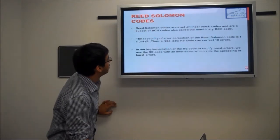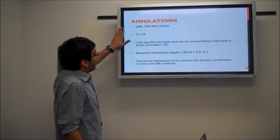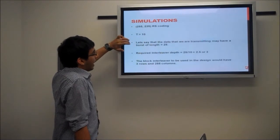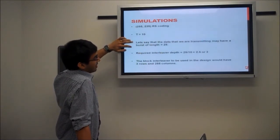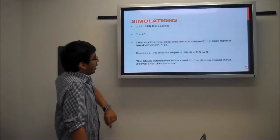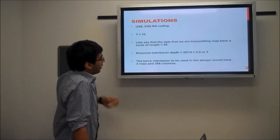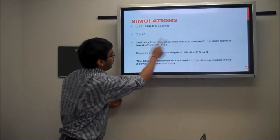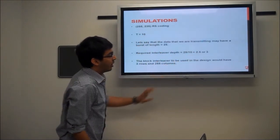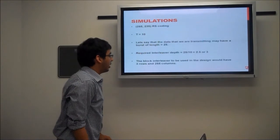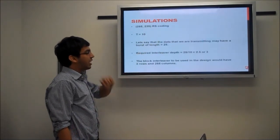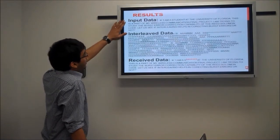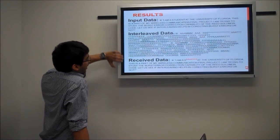For our implementation we used an interleaver with the Reed-Solomon code. What an interleaver does is essentially spread the data, so whenever you have a burst error channel and expect many bits corrupted at one location, we spread the data so that the burst spreads over a smaller length. For our simulations we use RS(255, 235) with T = 10 and assume the channel produces a burst of length 25. The required interleaver depth is 25 / 10 = 2.5, so we use an interleaver with depth 3, having 3 rows and 255 columns.